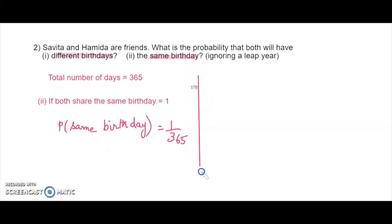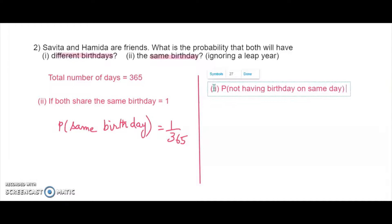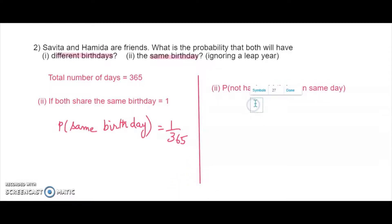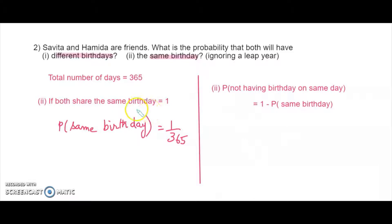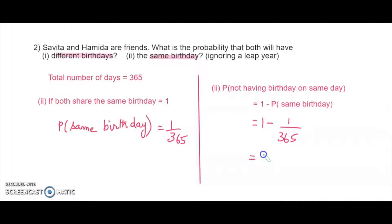Now for the first part: if they both do not have their birthday on the same day, the probability of not having a birthday on the same day equals 1 minus the probability of same birthday. Because there are only two possibilities — either they have the birthday on the same day or on different days — the two probabilities add up to 1. So it is 1 minus 1/365, which equals 364/365.